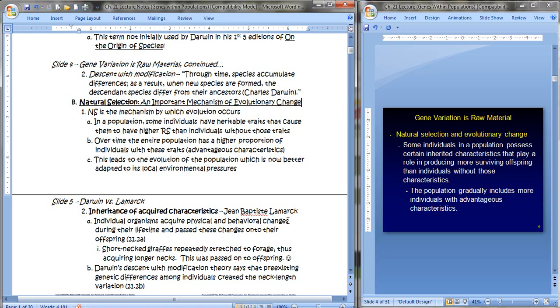So what is natural selection? Let's remind ourselves of what this mechanism is in order to achieve evolution. So natural selection is the mechanism by which evolution occurs. And that's something I'd like you to think about. That the natural selection is the mechanism, evolution is the outcome. So in a population, some individuals have heritable traits that cause them to have a higher reproductive success, RS is reproductive success, than individuals without those traits. So over time, the entire population could acquire a higher proportion of individuals with these traits, or advantageous characteristics. This leads to the evolution of the population, which is now better adapted to its local environmental pressures.